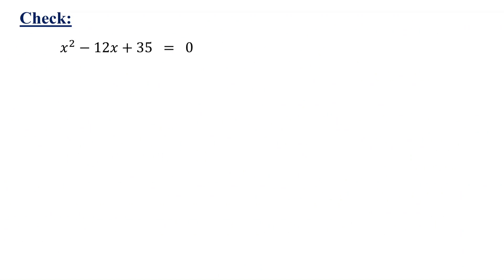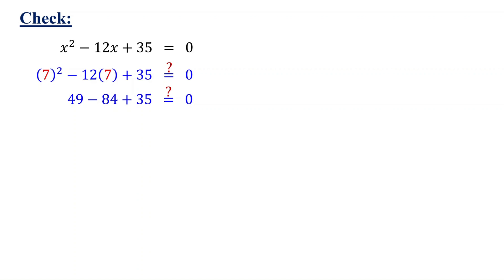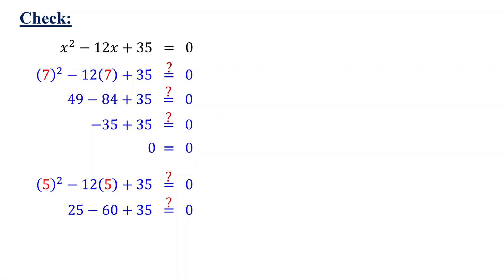We can check our solutions by substituting them back into the original equation. Substituting 7: 7 squared is 49, and 12 times 7 is 84. 49 minus 84 is negative 35, and this equals 0. Similarly, substituting 5: 5 squared is 25, and 12 times 5 is 60. 25 minus 60 is negative 35, and this equals 0. As you can see, both 7 and 5 are valid solutions.